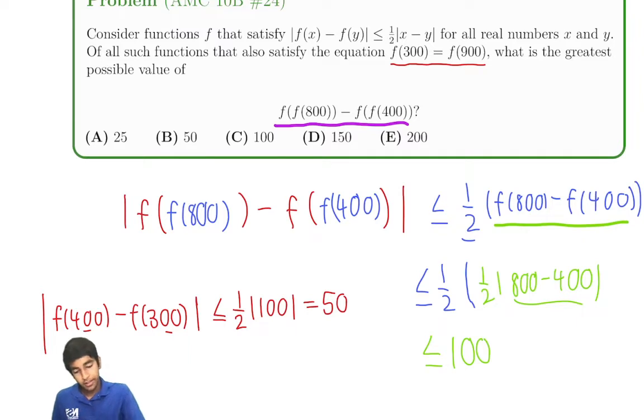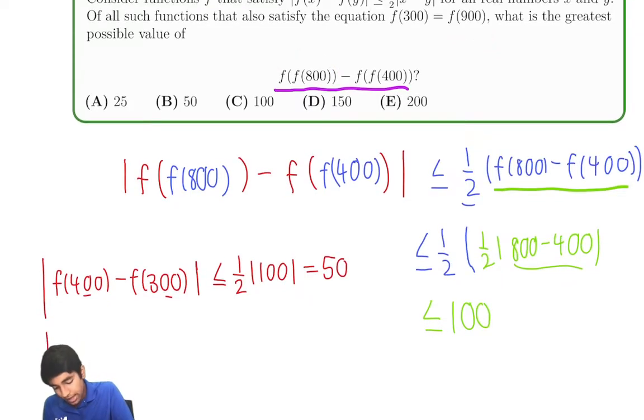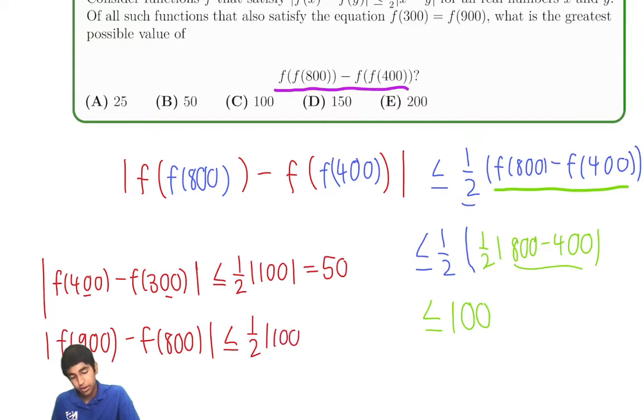Oh, we can do something similar for 900 and 800. Let's do that. We also have f(900) minus f(800). That's also going to be less than or equal to 900 minus 800, 100. 1/2 times the absolute value of 100. Again, 50.